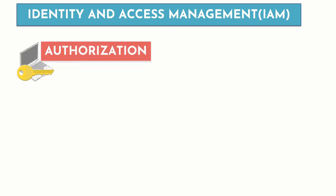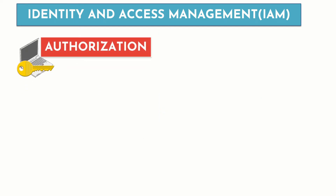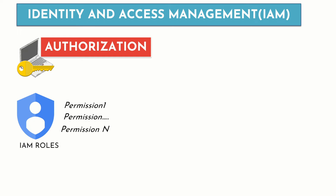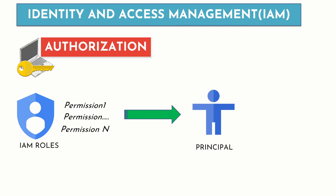Certain permissions can be granted to a principal with the help of IAM roles. A role is nothing but a collection of permissions that determine what operations are allowed on a resource. When you grant a role to a principal, you grant all the permissions that the role contains. This is how authorization works.